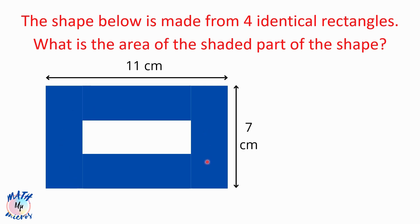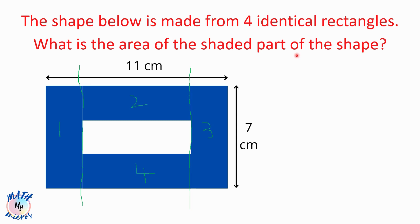We need to find the area of this shaded blue part — we don't need the area of the unshaded part. They've also given a clue which says there are four identical rectangles, so this whole shaded figure is made up of four identical rectangles. Let me demarcate them: this is number one, number two, number three, and number four. Identical means all four rectangles have the same length and width.